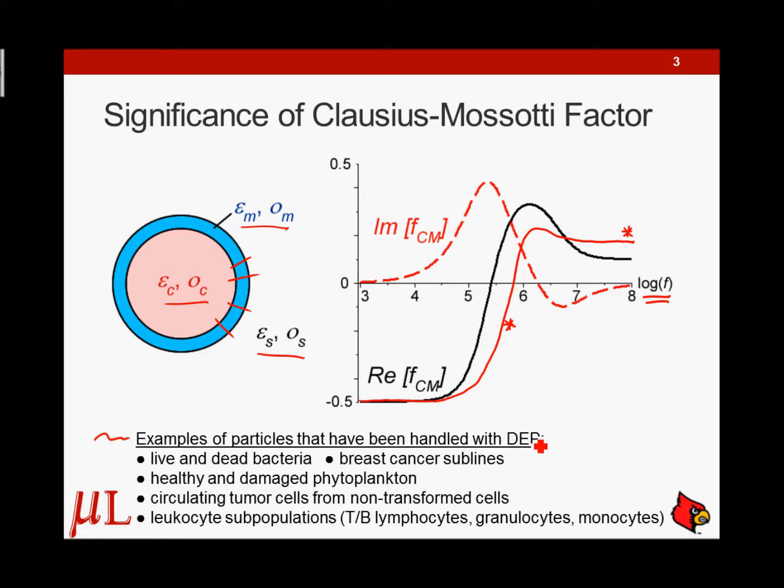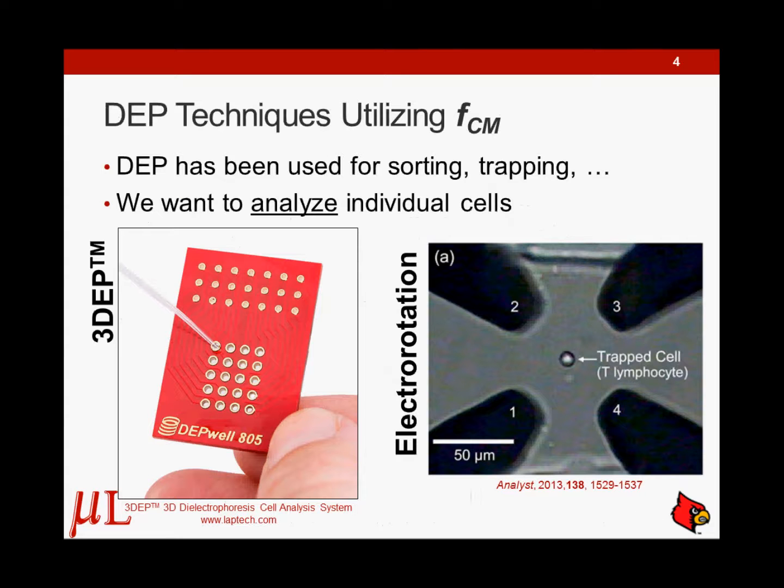Some examples of particles that have been used and analyzed, whether it be sorted or manipulated with respect to the Clausius-Mossotti factor and dielectrophoresis, you have live and dead bacteria that's in use, cancer sublines, healthy and damaged phytoplankton. This is just a short list of things that have been manipulated with dielectrophoresis. Some techniques that utilize the Clausius-Mossotti factor, if you choose a particular frequency to maybe you want to sort cells, you want to sort a live cell versus a dead cell, you could select your particular frequency and do that. You can sort, you can trap, you can selectively concentrate. This has all been done with dielectrophoresis.